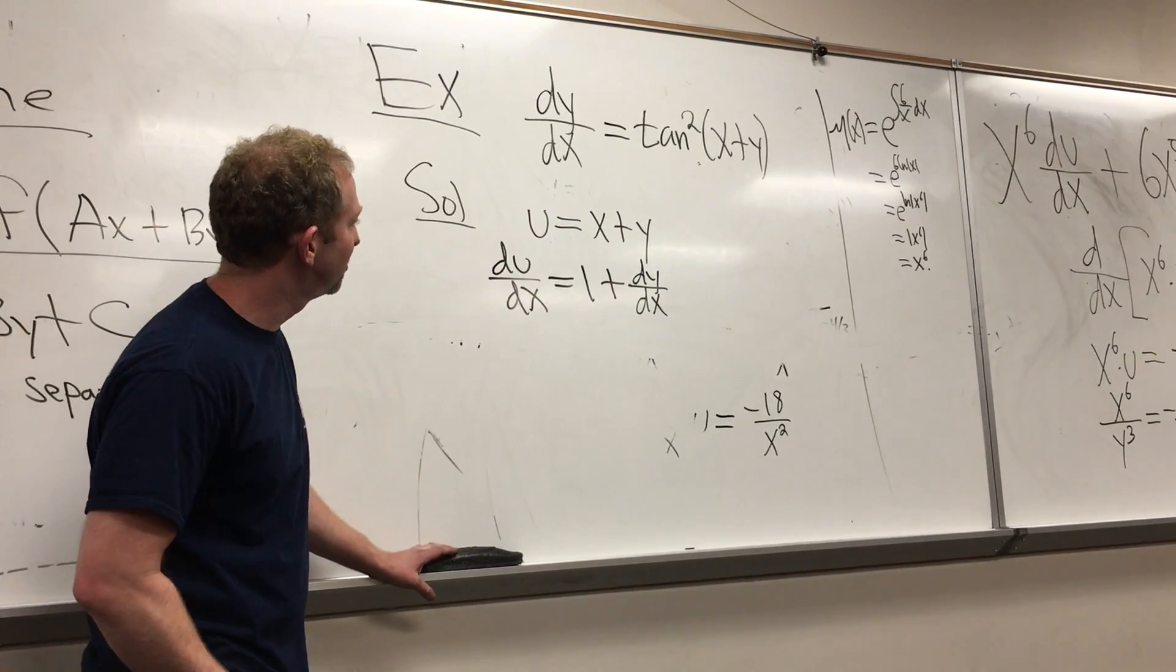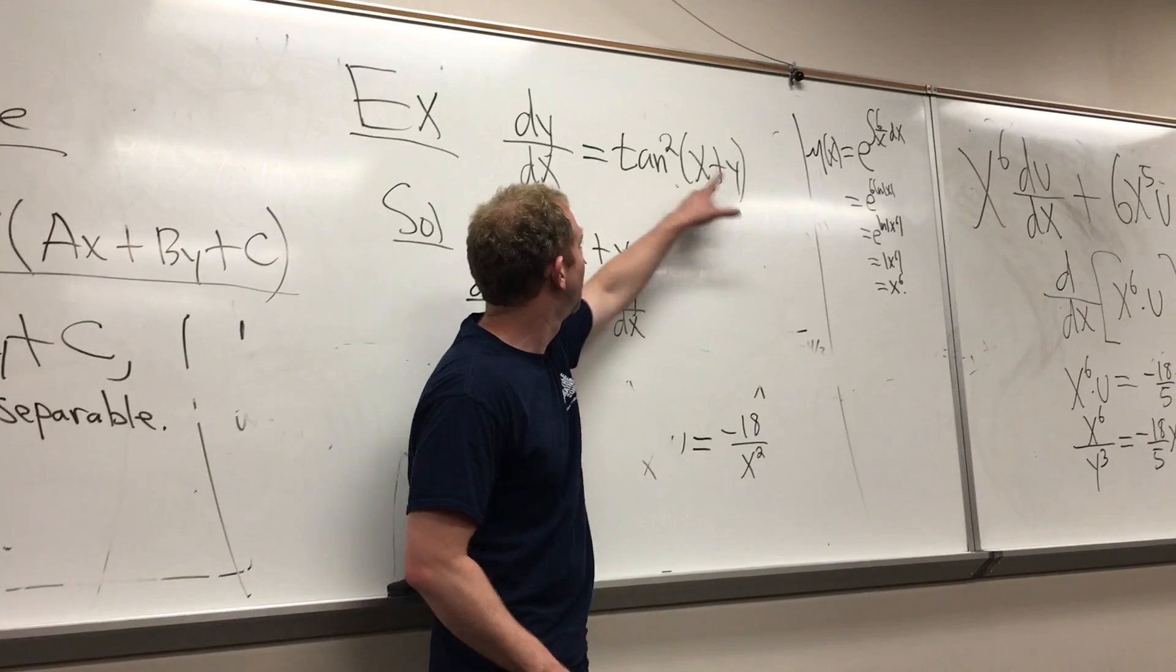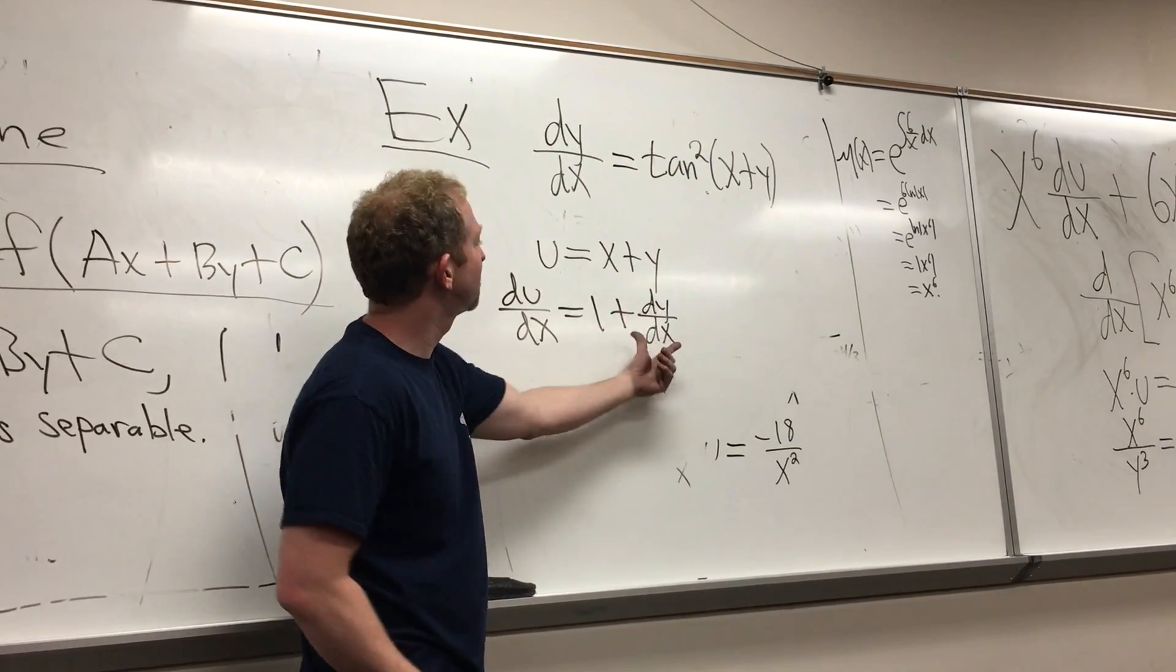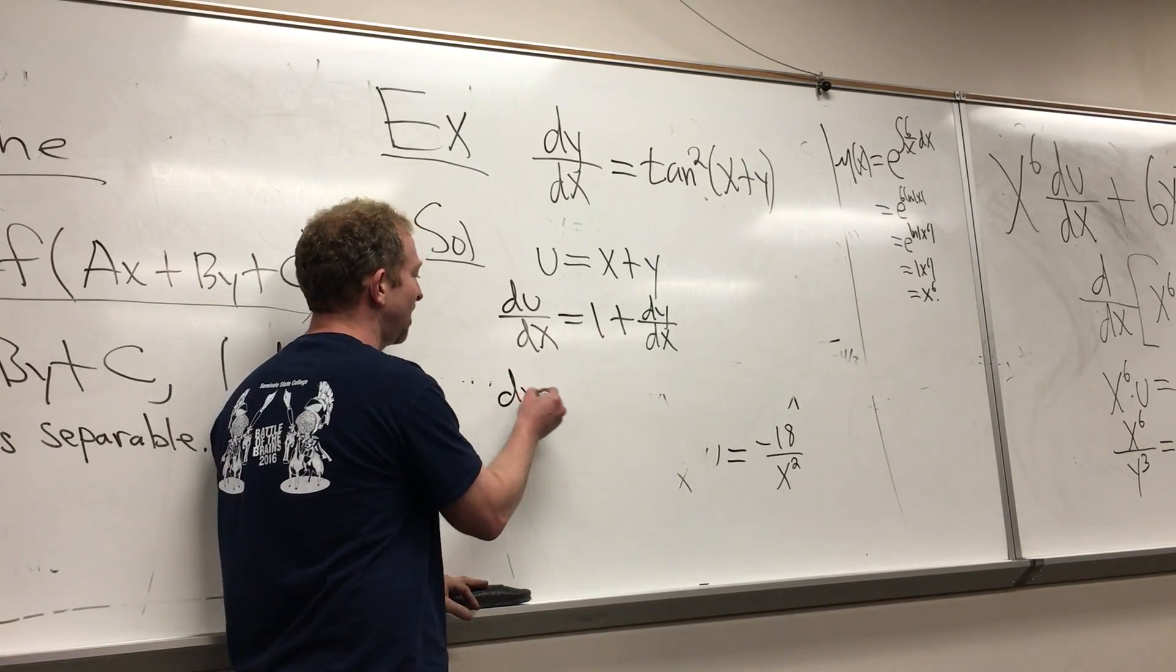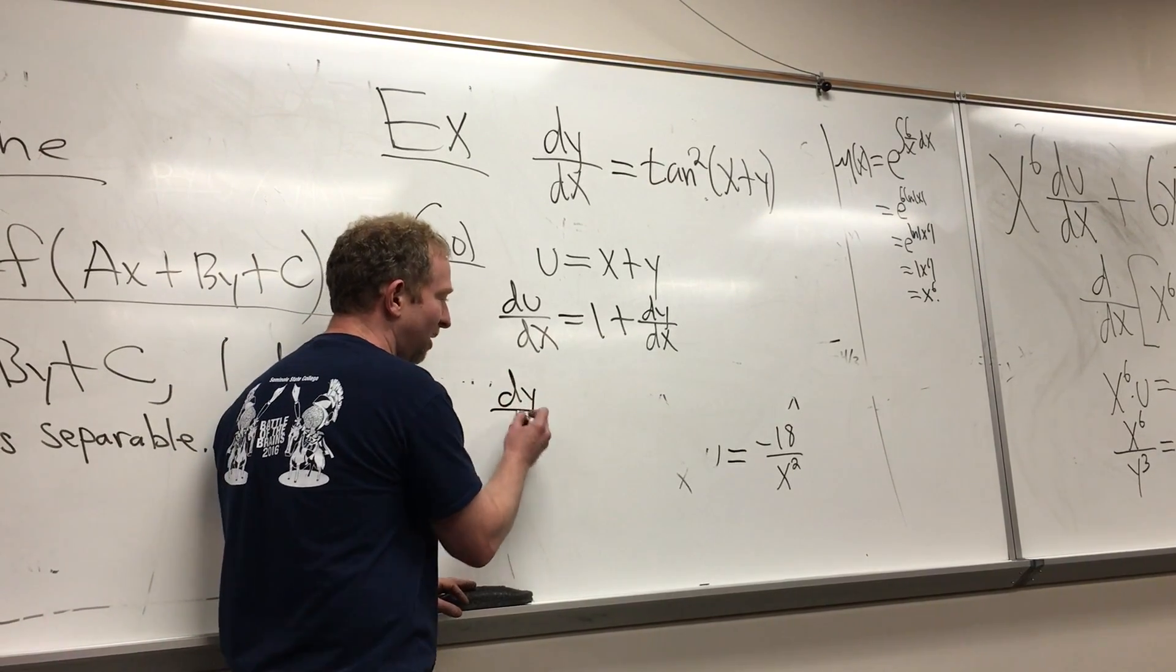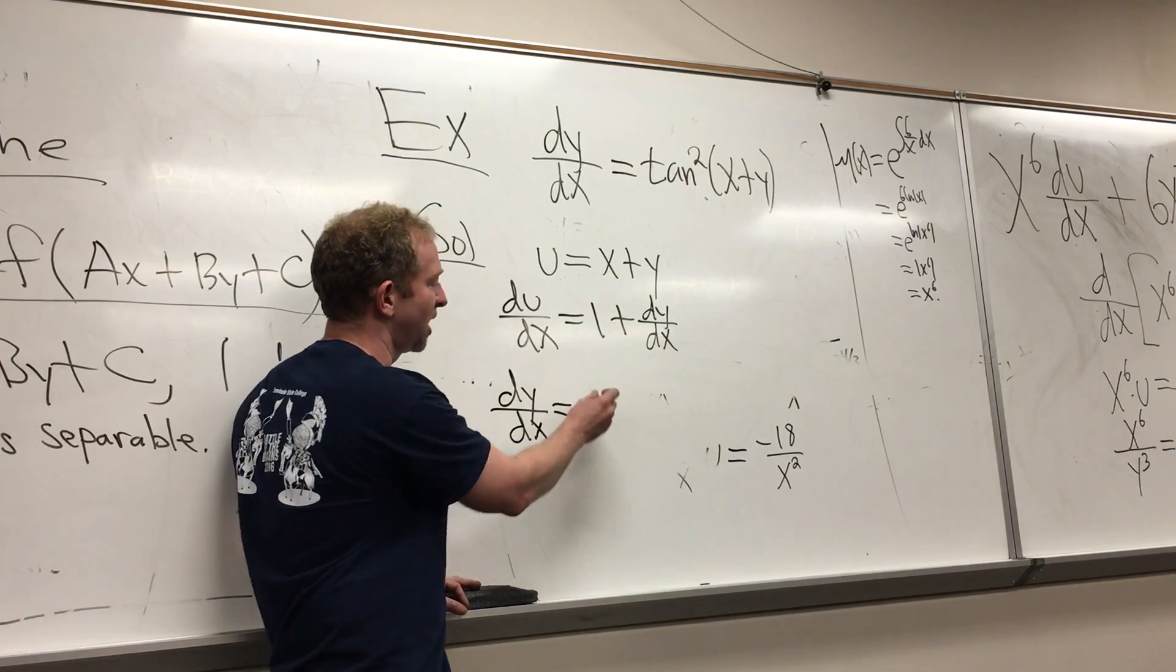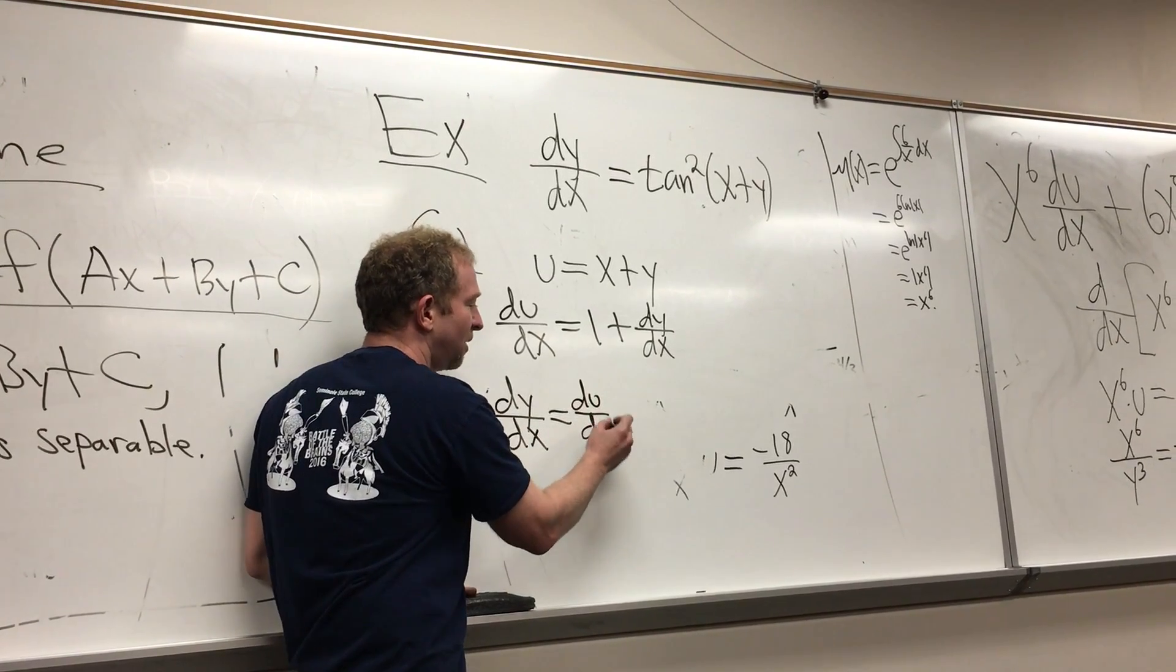Okay. And then I guess we have to make a full substitution here. So obviously this is going to be u, but here we have dy/dx. So we can solve this for dy/dx by subtracting one, right? So it's pretty self-explanatory. I haven't done this in a year, and you see that it makes sense. It's not that bad.